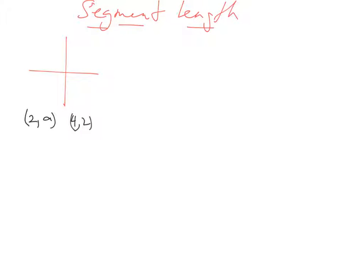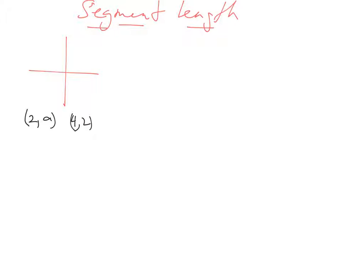We have a look at segment length again. This time we are given two bits of information: we're given two coordinates and we are told their length. We've got a point and we're told the length is the square root of 6 between these points.